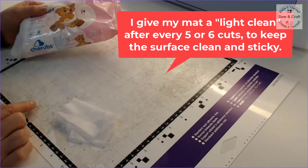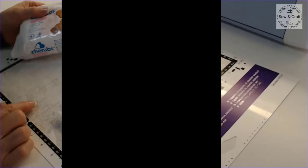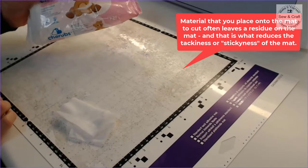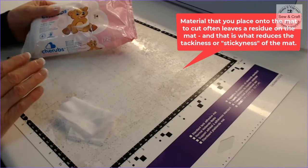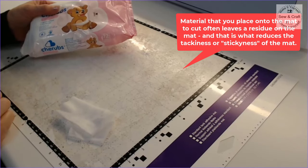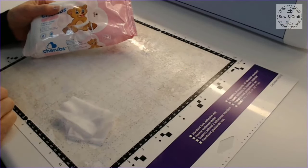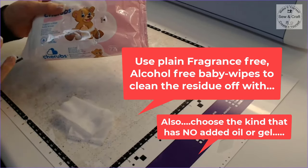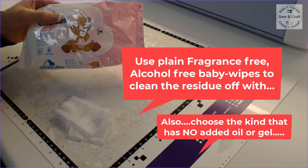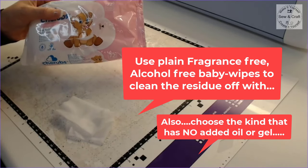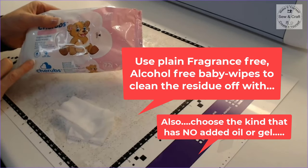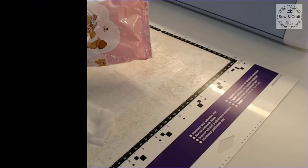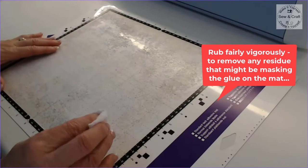The material that you place on the mat often leaves a residue on the mat and that is what reduces the tackiness or the stickiness of the mat, so we need to clean that off. To do that we're going to use plain fragrance-free, alcohol-free baby wipes to clean that residue off. Also choose the kind that has no added oil or gel.